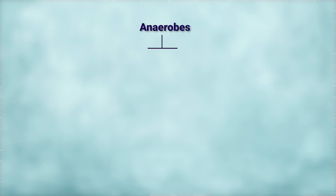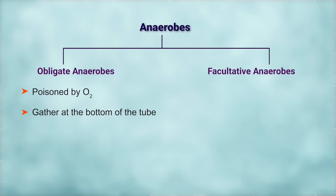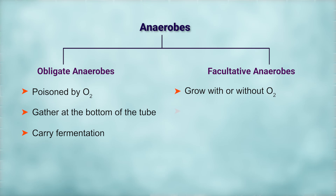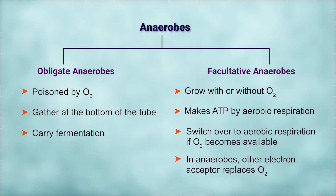There are two types of anaerobes: obligate anaerobes and facultative anaerobes. Obligate anaerobes are poisoned by oxygen and gather at the bottom of the tube, carrying out fermentation. Facultative anaerobes grow with or without oxygen, making ATP by aerobic respiration if oxygen is present, and switching over to aerobic respiration if oxygen becomes available. In anaerobes, other electron acceptors replace oxygen.